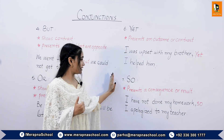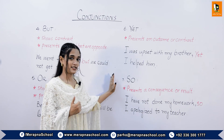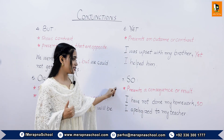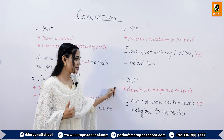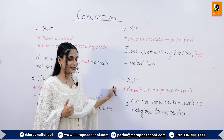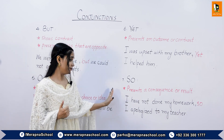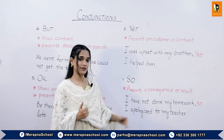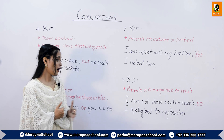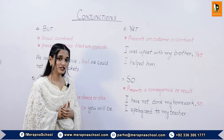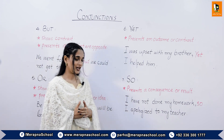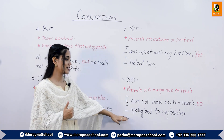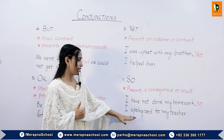The last coordinating conjunction is 'so' and it presents a consequence or result. For example: 'I have not done my homework so I apologized to my teacher.' The second half of the sentence is showing a result.